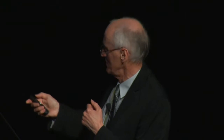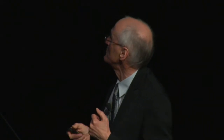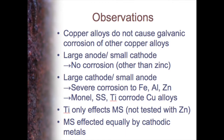Some other work on anode and cathode areas — researchers looked at mild steel, copper, and titanium joined with various metals, and found that the area ratio was very important. Copper alloys don't cause galvanic corrosion of other copper alloys. If you have a large anode and a small cathode, there is no corrosion other than for zinc, which shows very small amounts. Mild steel has quite a high basic corrosion rate by itself, but with a very large anode and a very small cathode, you don't get any additional corrosion rate for most combinations.